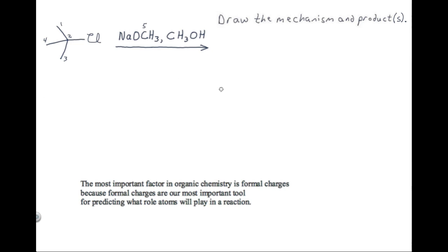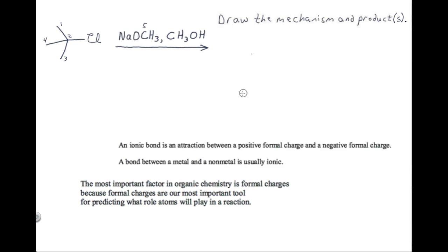Remember that in the previous video we saw that the most important factor in organic chemistry is formal charges. So we need to start by asking if there are any formal charges in these starting materials. The way you find formal charges is by looking for ionic bonds — if there are any ionic bonds, those will have a formal charge. In fact, we should see that we do have an ionic bond here between the sodium and the oxygen. Sodium is a metal and oxygen is a nonmetal, and a bond between a metal and a nonmetal is usually ionic.